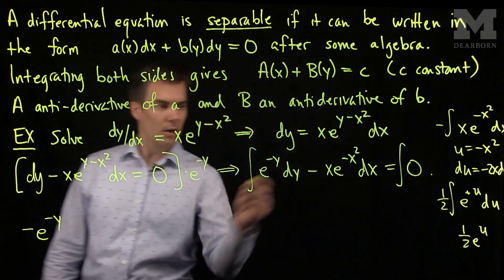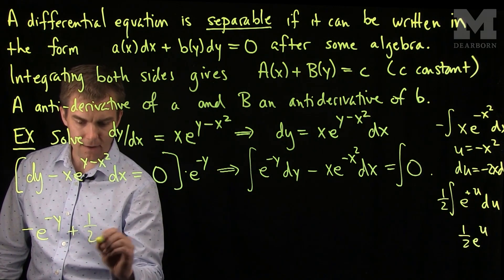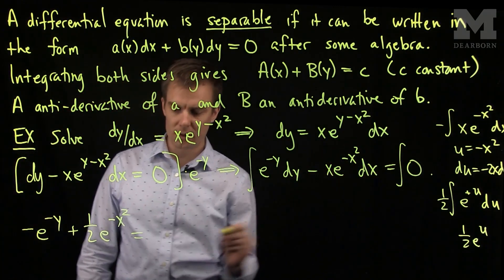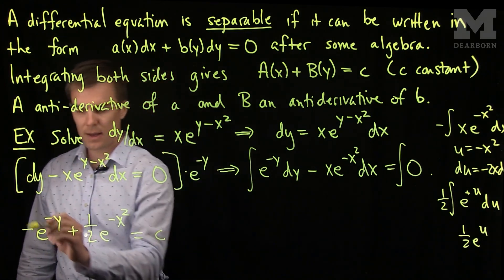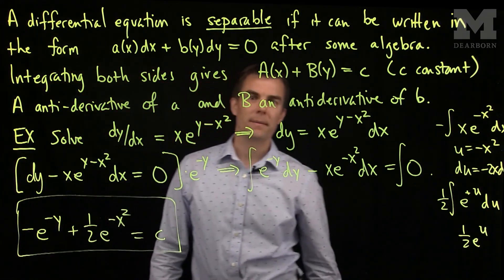Using this idea, we integrate the second equation and get plus one-half e^(-x²). And when we integrate zero, we get our constant c. And there is the solution of our differential equation. Thanks a lot.